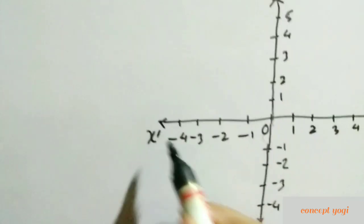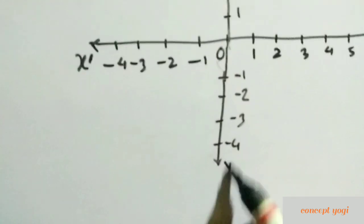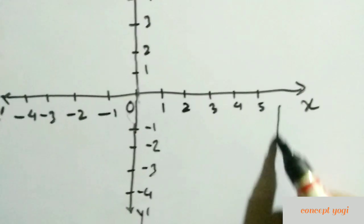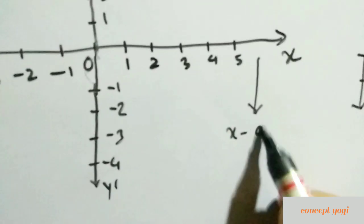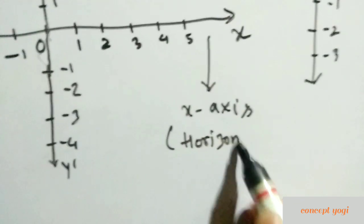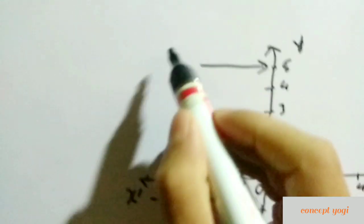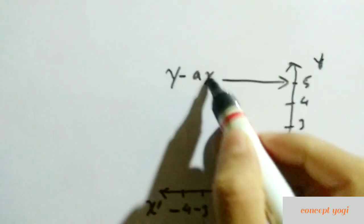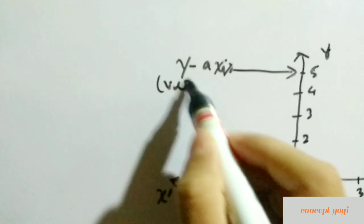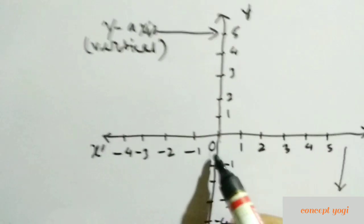This horizontal line is called the x-axis — we write x on both ends. This vertical line is called the y-axis — we write y on both ends. So this horizontal line is the x-axis and this vertical line is the y-axis.